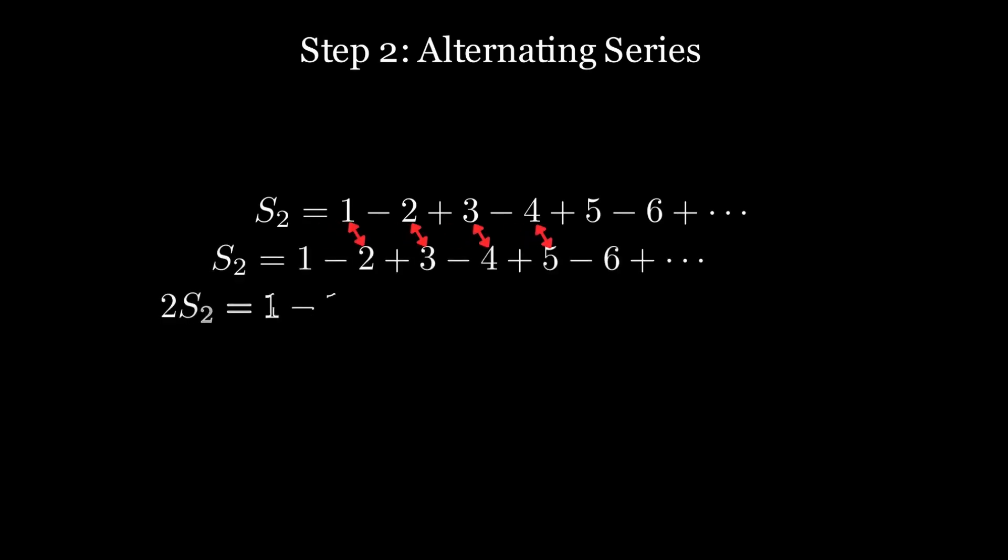So that the sum of two alternating series become just one Grandi series. And the Grandi series had the half value. So he thought that this would have the value a quarter. Then in the final step,